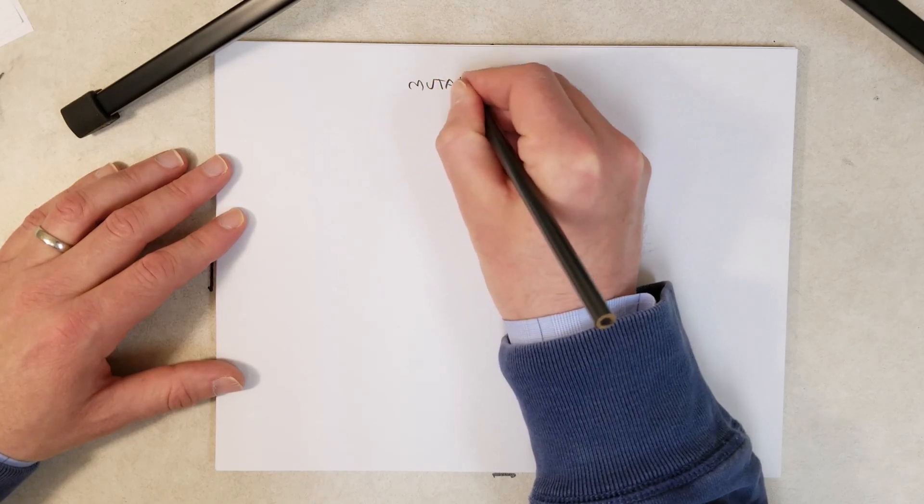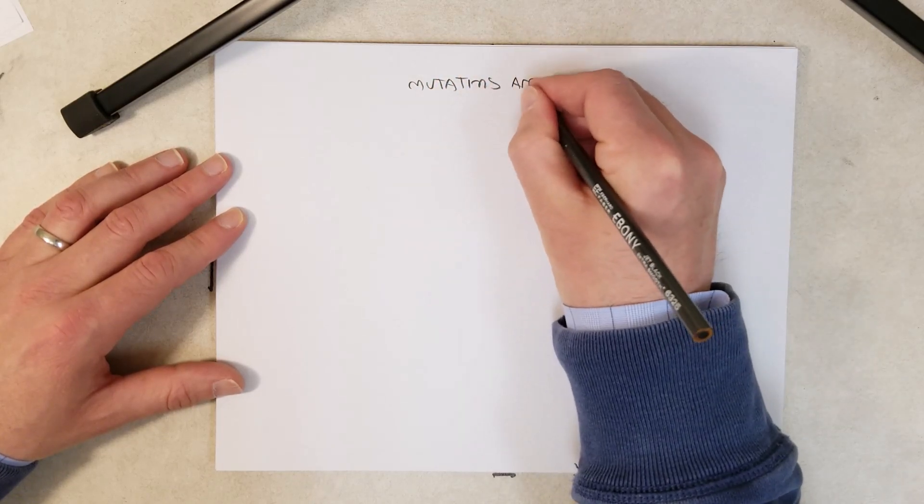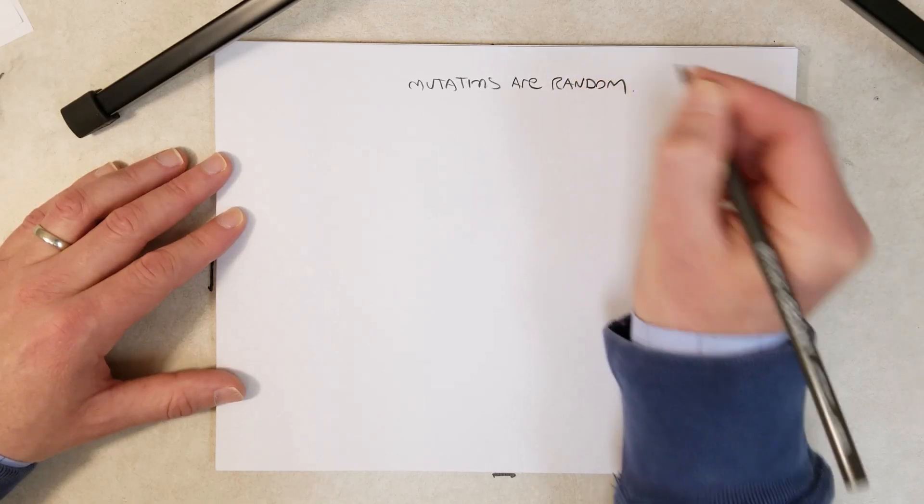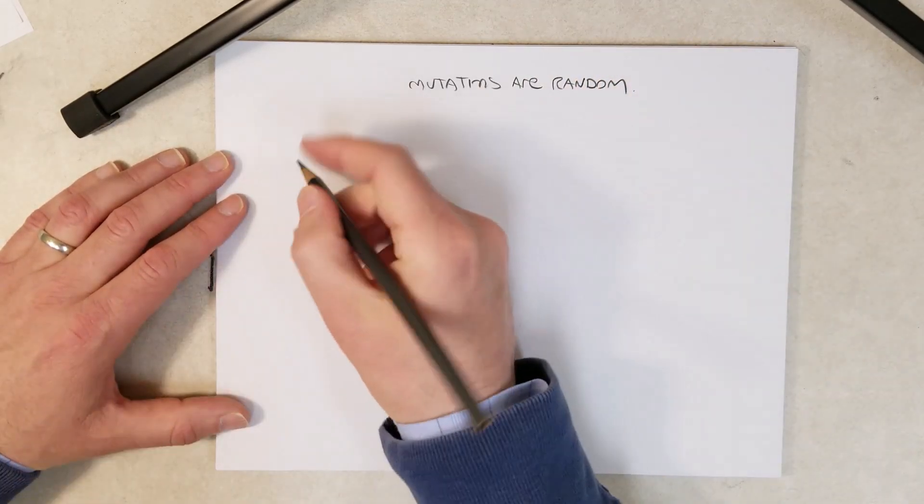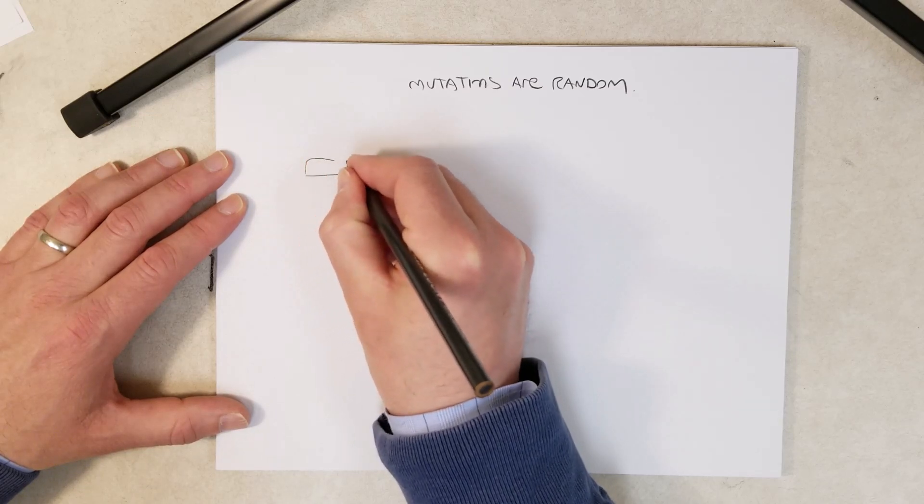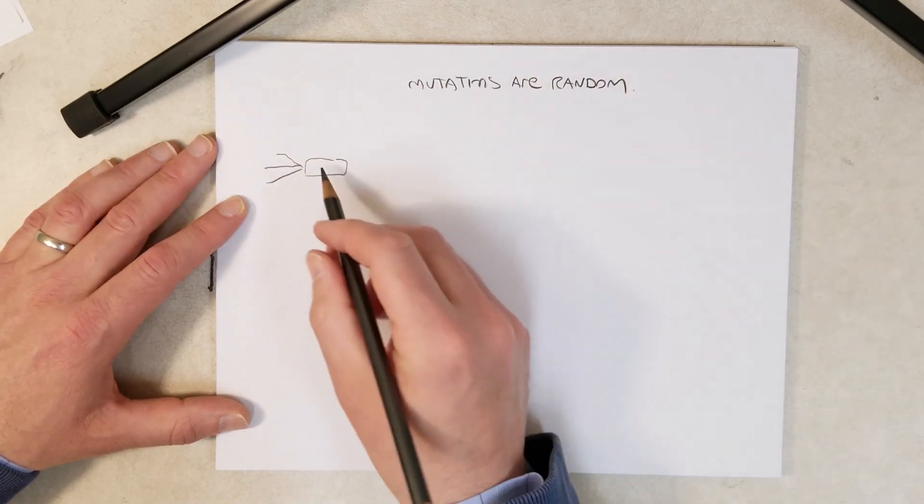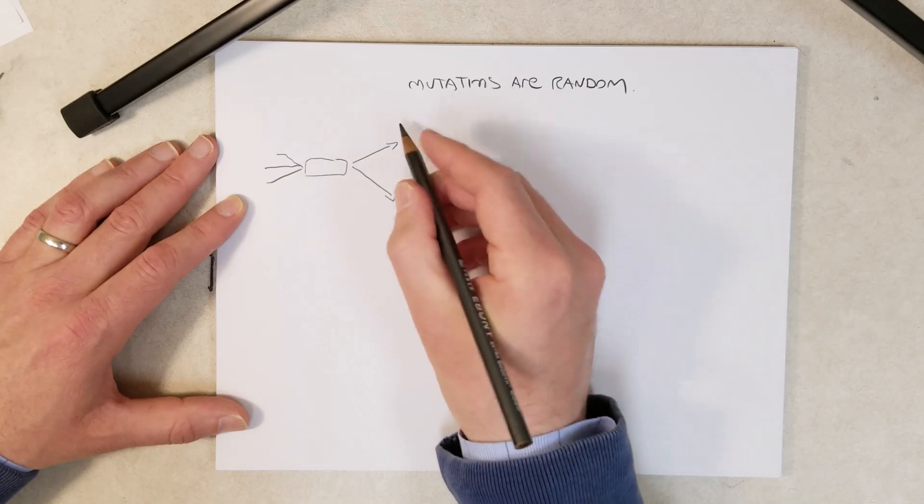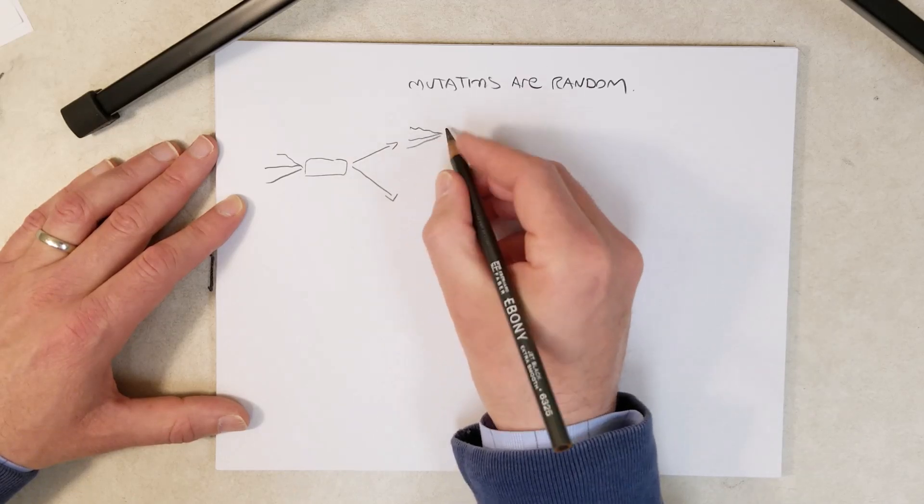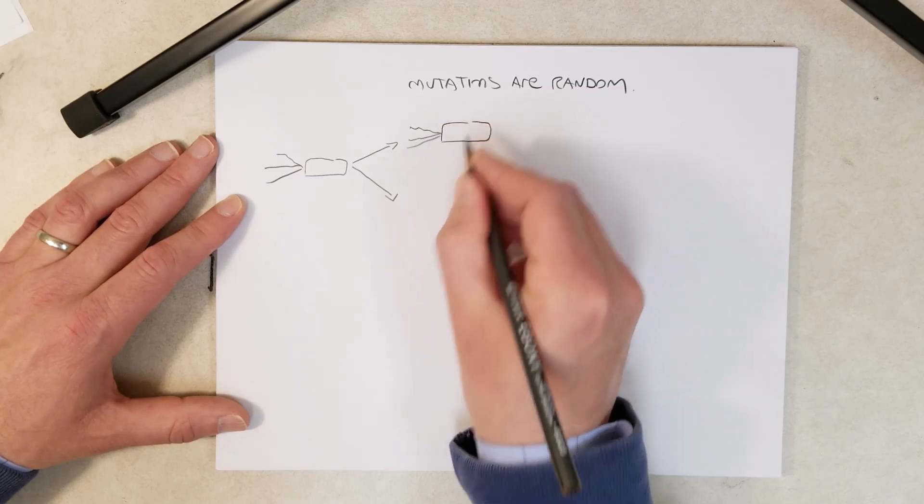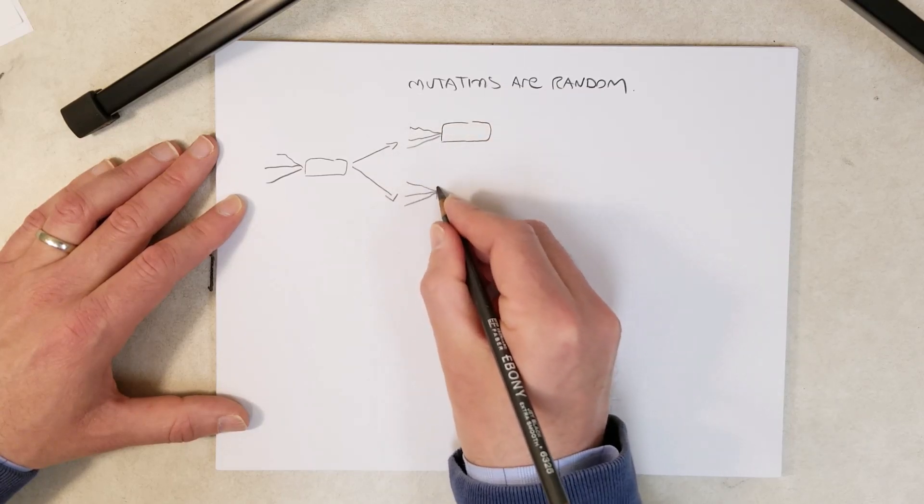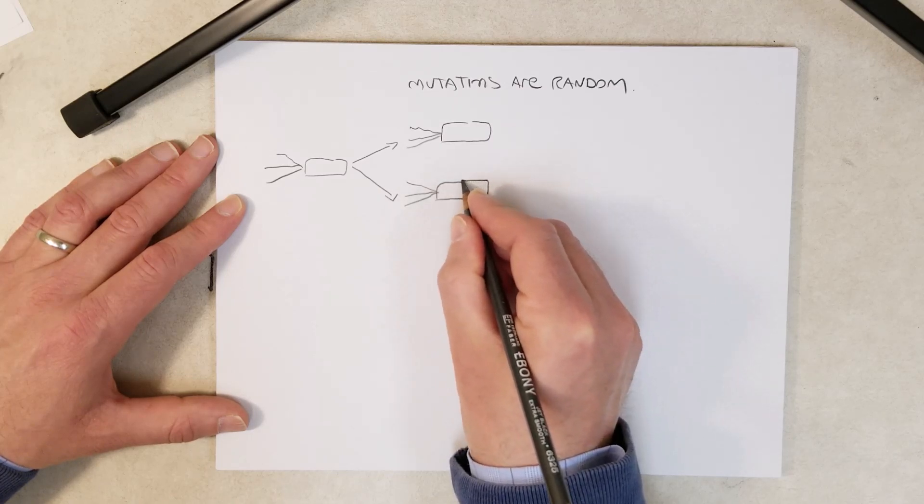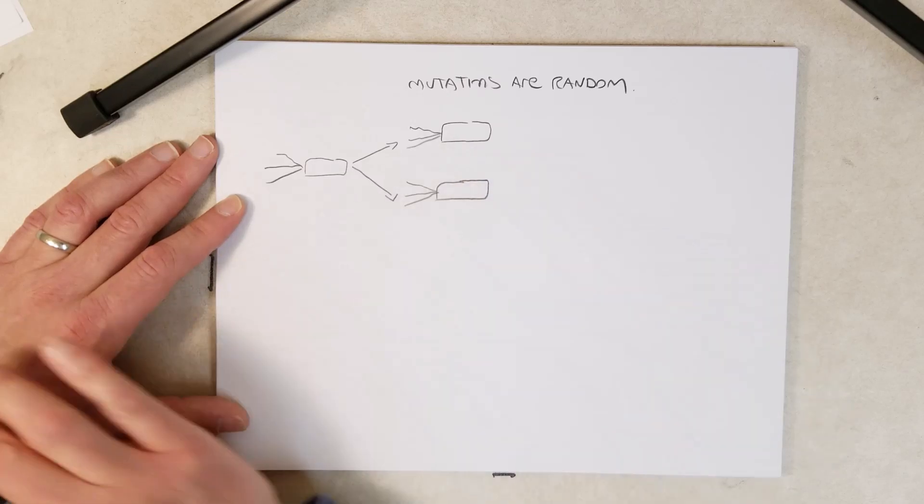That's what directed means in this topic we're discussing. Directed is when the cell comes into contact with something inhibitory in the environment and some protein complex mutates the correct genes to give that E. coli a chance of surviving. That's the mutations are directed hypothesis. Now the other possibility, the contrasting possibility, is that mutations are random. If they're not directed, they should be random. That's the competing hypothesis.